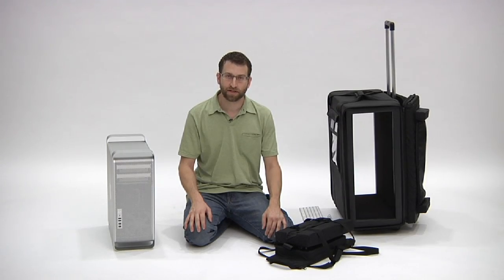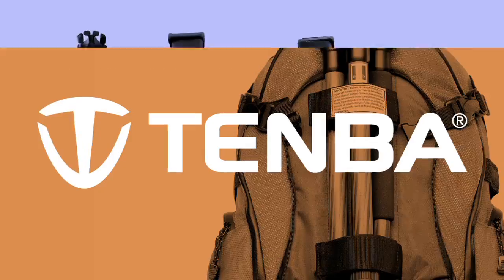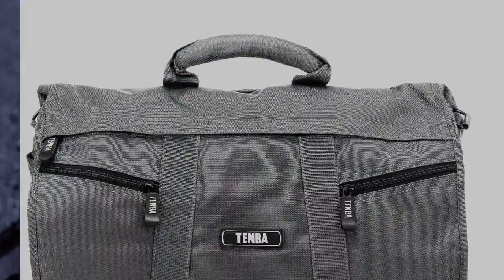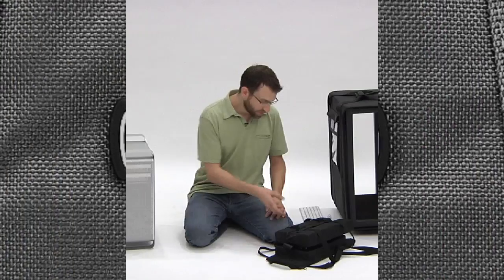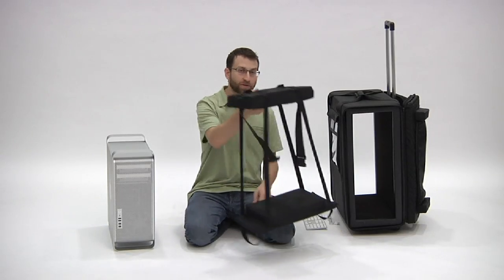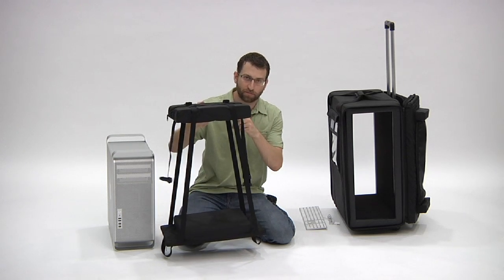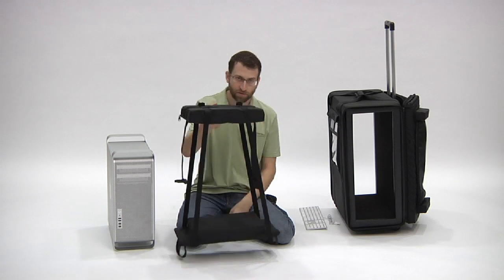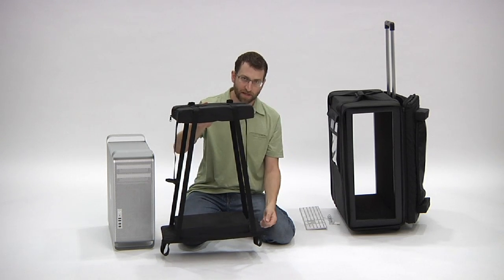Hi, we're going to do a quick demonstration of how to set up the new Aircase Double Door from Tenba for Mac Pro Tower. The first step is to take out the harness system. We want to keep the large flat piece down at the bottom and the shorter padded section up at the top. You want to extend the straps so that they're fully extended so that the harness is at its maximum height.